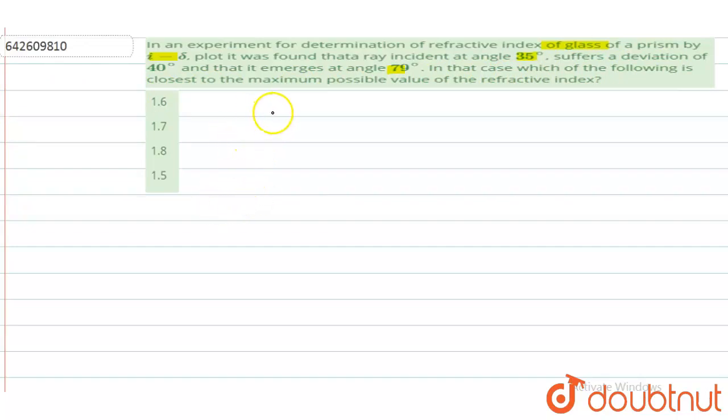What we have given: angle of incidence I is 35 degrees, emerges at an angle E of 79 degrees, and deviation is given as 40 degrees.